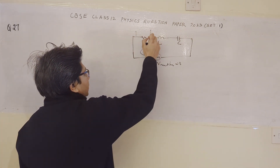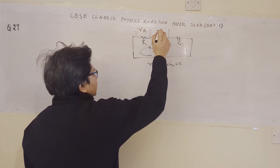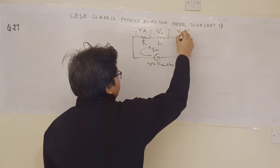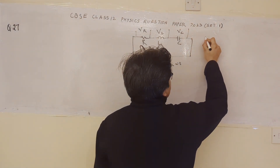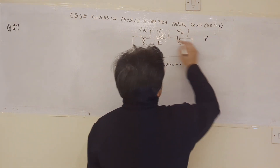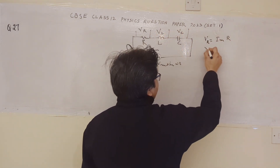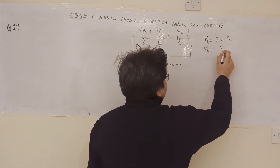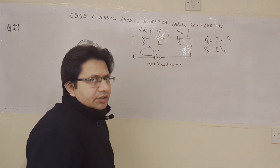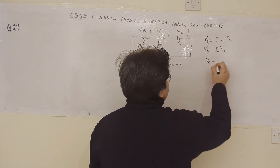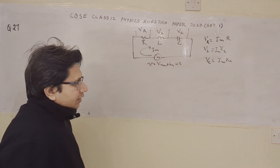Let us assume that the voltage across R is V_R, voltage across L is V_L, and voltage across C is V_C. In terms of the current and Ohm's law, we can write: V_R equals Im·R, V_L equals Im·X_L where X_L is the inductive reactance, and V_C equals Im·X_C where X_C is the capacitive reactance.